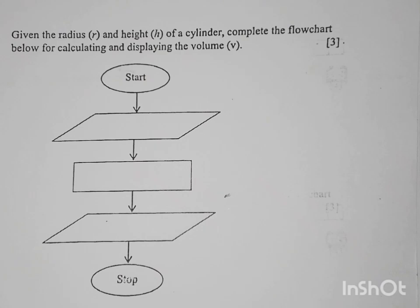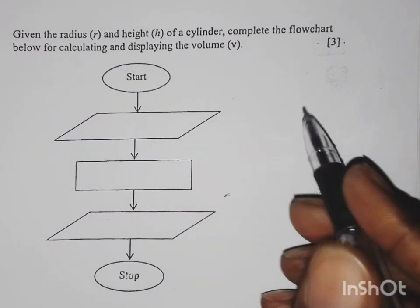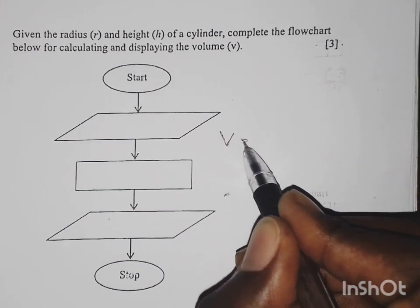So the first thing that you are going to do is let us first come up with the formula for volume of a cylinder. Volume of a cylinder is given by the formula V equals pi r squared h.